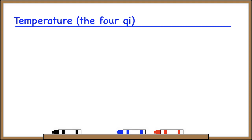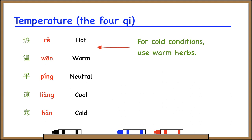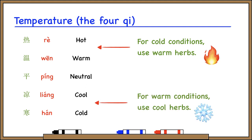First is temperature. Each herb has a temperature: hot, warm, cool, or cold. We call these the four qi, so we can say this is the qi of an herb. An herb can also be neutral or balanced, so even though we say there are four qi, there are really five temperatures. Our basic treatment principle is: if a patient is cold, give them warm herbs; if a patient is warm, give them cooling herbs.